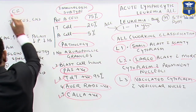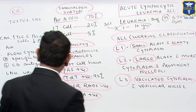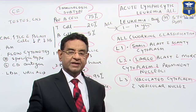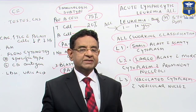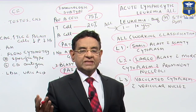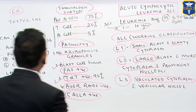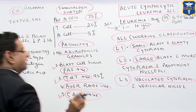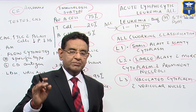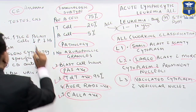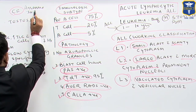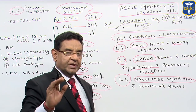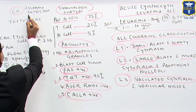Now let us see the clinical features. In the bone marrow, abnormal WBCs are proliferating and they occupy the main space in the bone marrow. So there is a large amount of abnormal cells. They suppress normal RBCs, so the patient has anemia. Due to anemia, the patient develops fatigue. Normal WBCs are also suppressed, so patients are prone to infection. Normal platelets are also suppressed, so the patient has thrombocytopenia and bleeding tendencies.